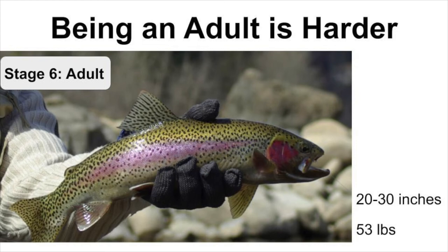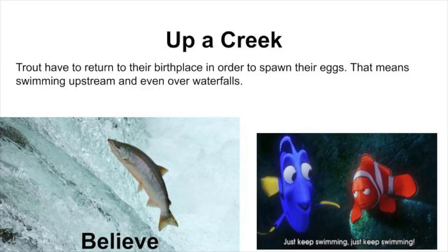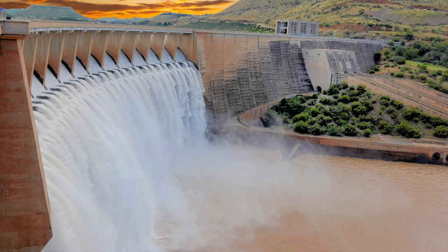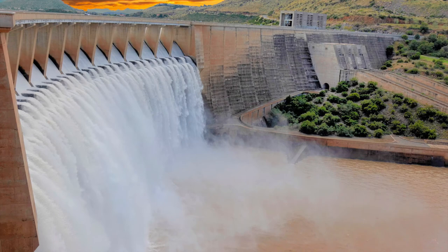Adult rainbow trout can reach up to 20 to 30 inches in length and weigh up to 53 pounds. Trout always return to their birthplace in order to spawn their eggs. All trout have instinctive homing signals that occur internally when it's time for them to reproduce. Rainbow trout usually make this trek when they are about 3 or 4 years old. Their long journey back upstream takes a lot of energy and is also very risky. They must overcome many obstacles, including dams and waterfalls.